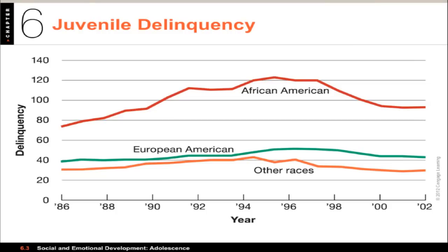Delinquency is also associated with low verbal IQ, low self-esteem, immature moral reasoning, and impulsivity. Other risk factors for criminal behavior include early substance abuse, poor grades, sexual activity, young age, and having delinquent friends.